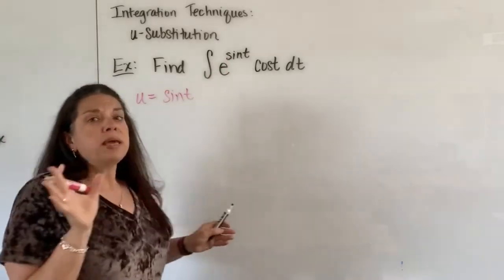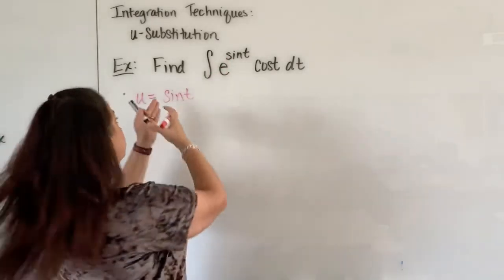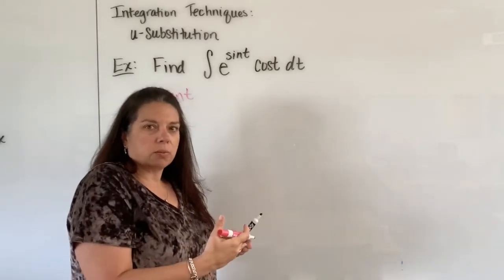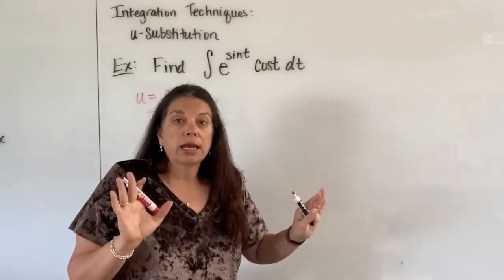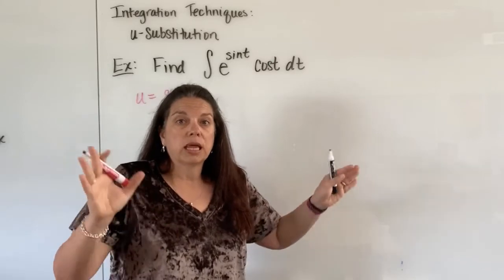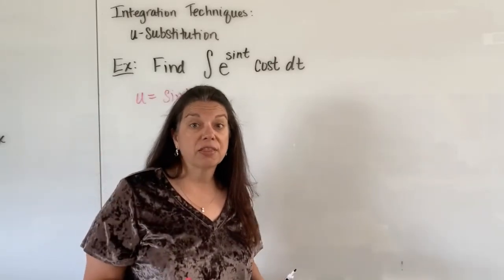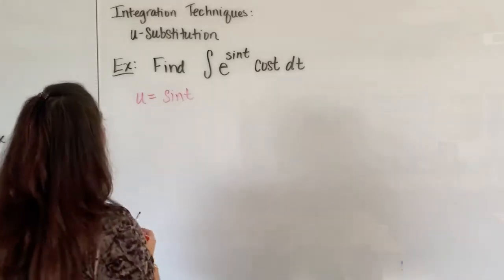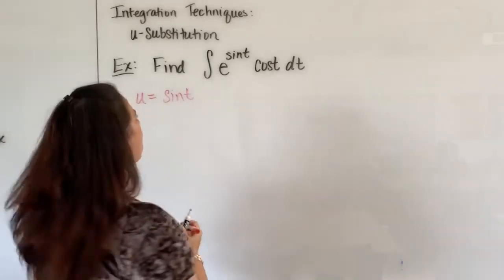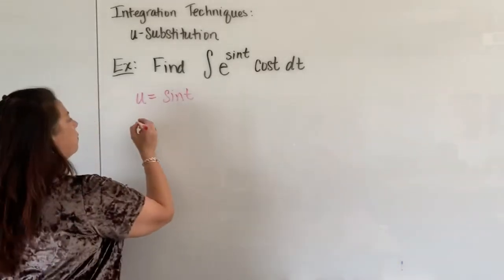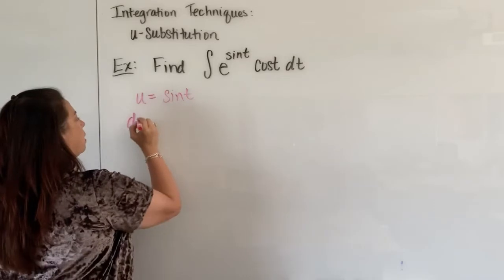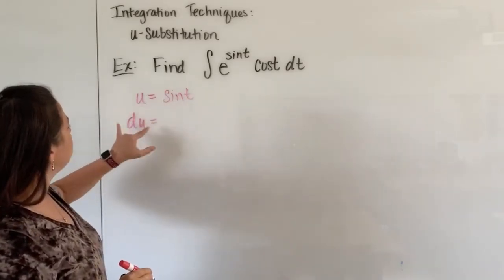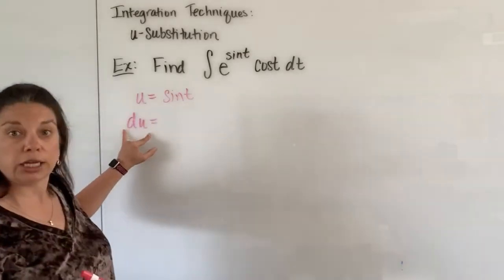And again, if you pick something other than sine t in the beginning, you might be able to make a little progress, but at some point you're going to hit a wall and realize maybe I should pick another u. So don't be afraid to do that. So we're going to pick u as sine t, and I've got to take the derivative of that.